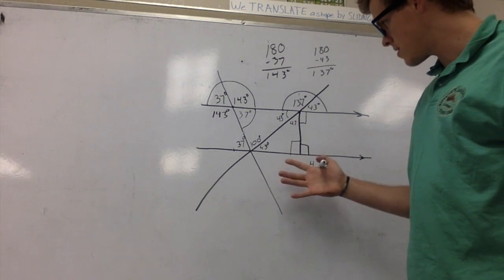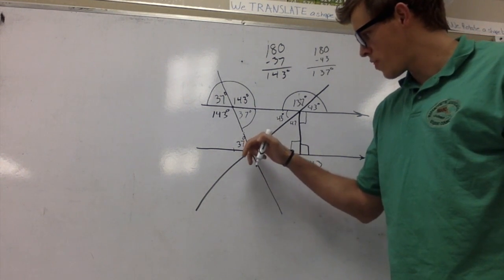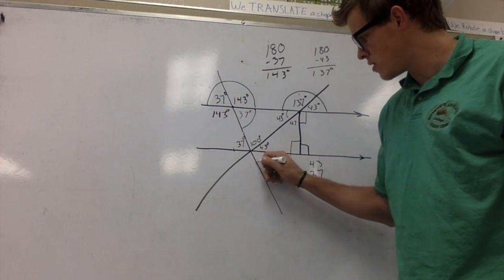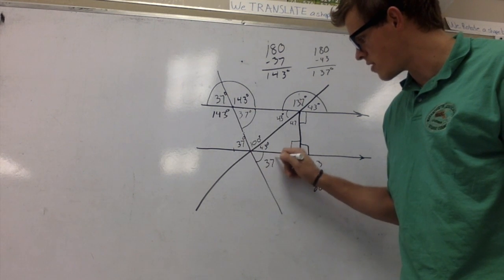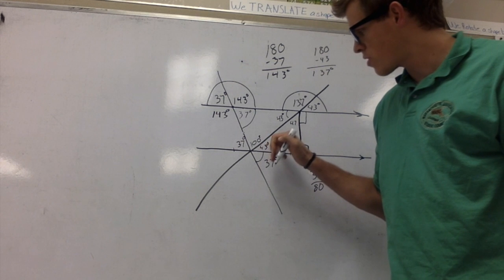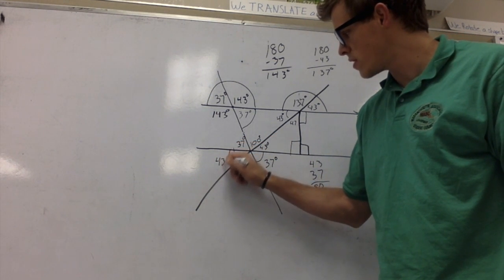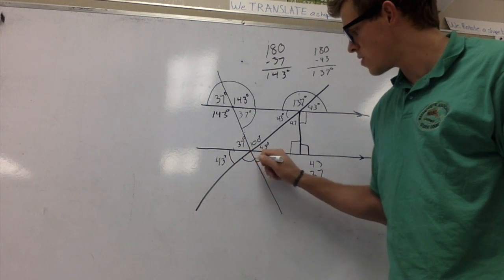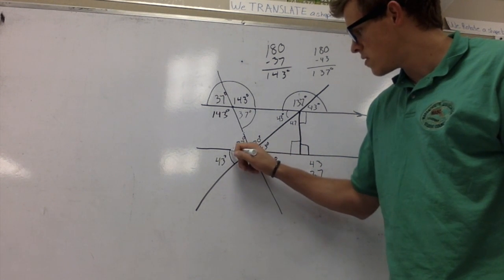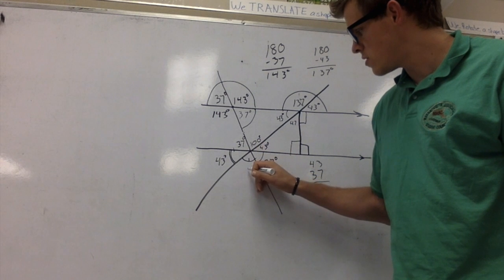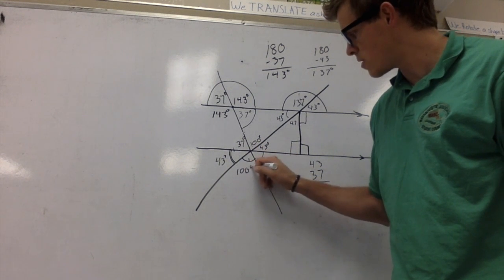Lastly, you should be able to finish this off. 37 is vertical to this, so this is 37 also. 43 degrees is vertical to right here, so this is going to be 43 degrees. And this right here is going to be vertical to here, so it's going to be 100 degrees.